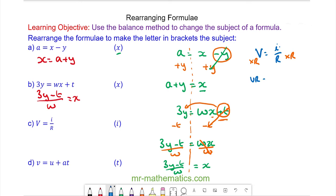For question d v equals u plus at and we're going to make t the subject. First thing we do is move this addition of u to the other side by taking it away so v minus u will cancel is equal to at. We divide both sides by a and these will cancel so v minus u over a equals t.